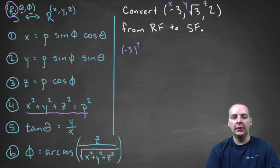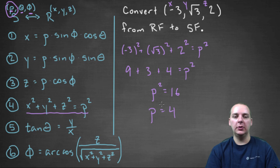So we'll have negative three squared plus root three squared plus two squared equals rho squared. That's x squared plus y squared plus z squared equals rho squared. Do a little algebra. Negative three squared is nine, root three squared is three, two squared is four, which equals rho squared. Nine, three, and four make sixteen, so rho squared equals sixteen, which means rho is four. Alright, so we've got that one.